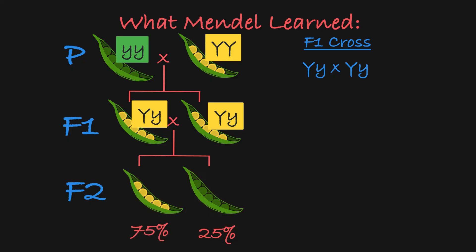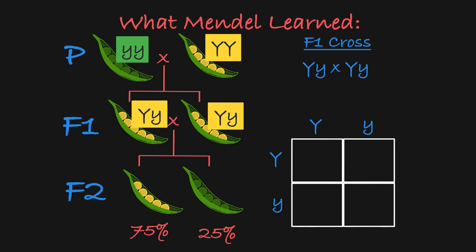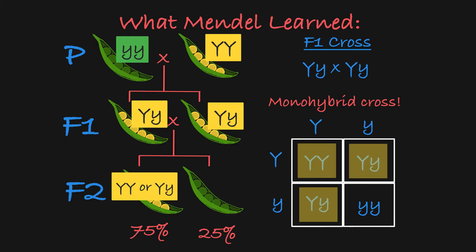This can be explained when you look at a Punnett square of the cross between two F1 plants. This is a classic monohybrid cross. You can see from the Punnett square that you can expect to see three times as many yellow pea plants as green pea plants in the F2 generation.